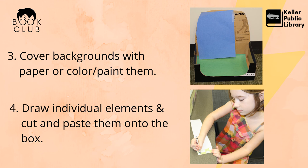Next, cover the shoebox so you can't see the brown cardboard or words on the box anymore. We found it easiest to use colored paper taped onto the box, but you could also use paint or white paper that you draw on — whatever works for your plan. Then draw individual elements, cut them out, and paste them onto the box exactly where you want them. We drew four different spectator towers — one for each house — a crowd in the background, and lines on the Quidditch field.